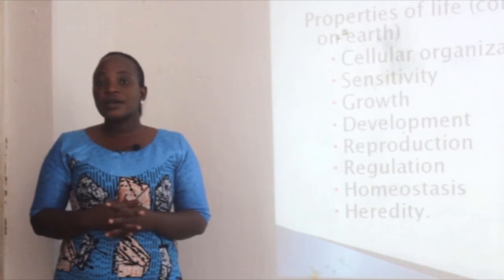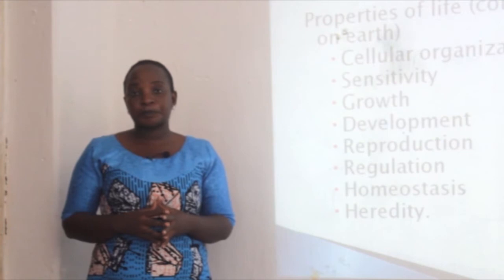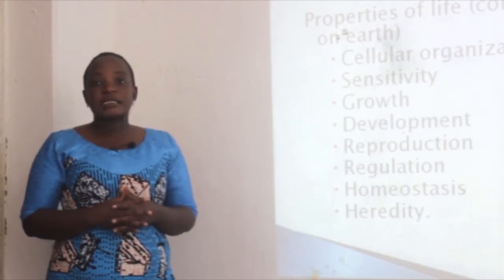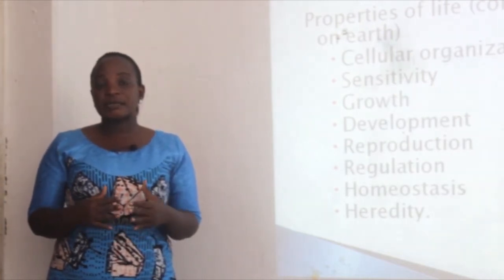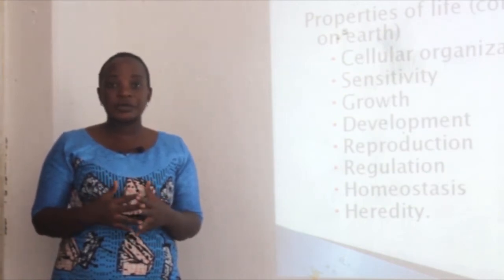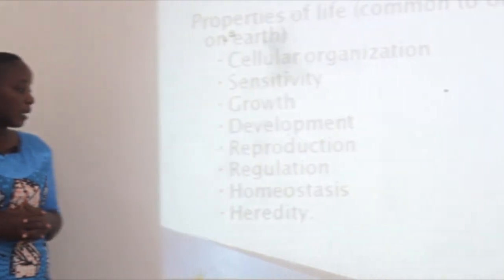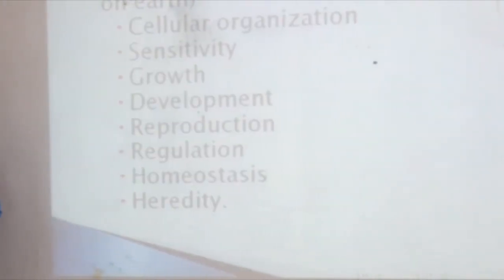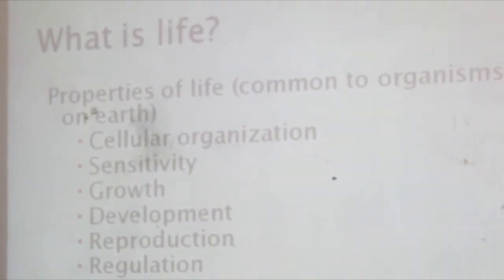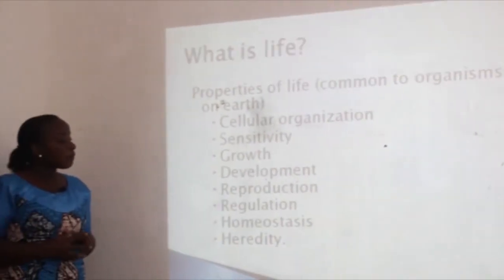Another property is regulation. All organisms on earth have evolved a certain regulatory mechanism. Another property is homeostasis. Homeostasis is the ability of organisms to maintain a constant internal environment, regardless of the changes that occur in the external environment. And the last one is heredity — the passing of features from parents to offspring, as already explained in reproduction.